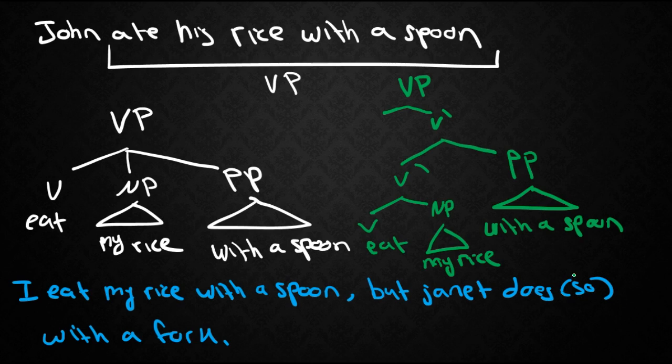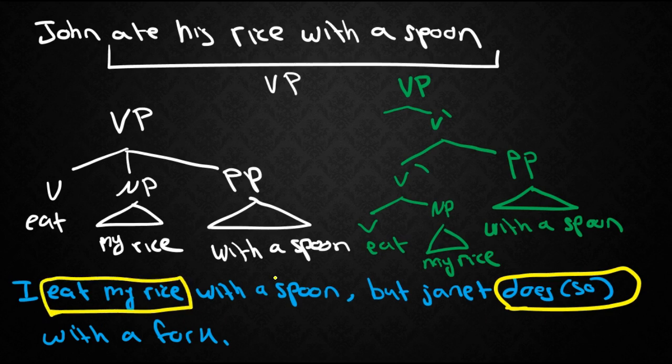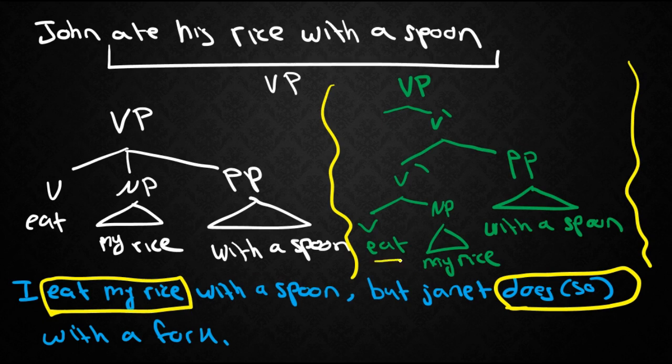However using our v bar models in the x bar notation we can get something like that. Here's an example of how that could be done. Now do so here again replaced what? It replaced eat my rice alone. Is that portrayed in this structure? Of course it is. Here's eat and here's my rice. So this replacement really targeted this v bar which is only one constituent. Great so now we've motivated v bar for the verb phrase as well.